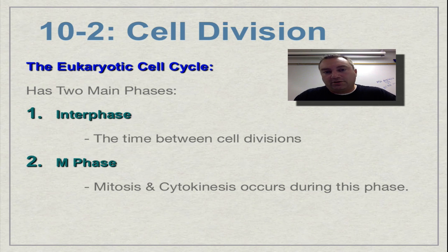The second part of the cell cycle is the reproductive phase. And this is the M phase. Now M stands for mitosis. So sometimes this is called the mitotic phase.